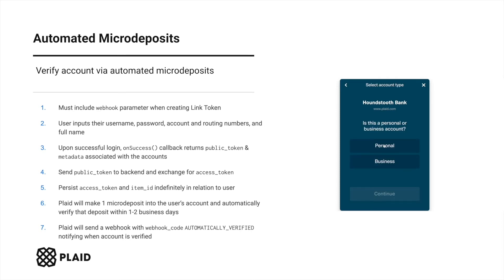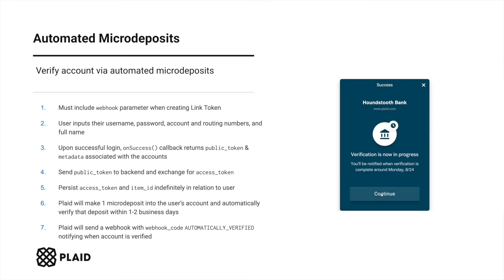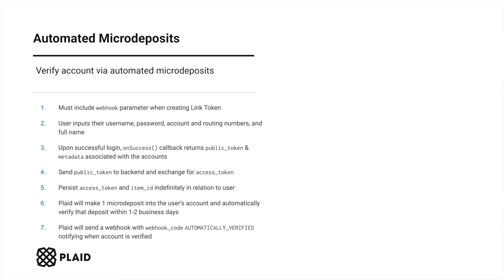Over the next one to two business days, Plaid will make one micro-deposit into the user's account and automatically verify that deposit. When that happens, Plaid will send you a webhook notification with webhook code automatically verified, and when you receive this webhook, the access token is then ready to retrieve the user's auth data via Plaid's auth endpoint.